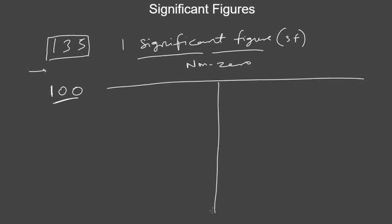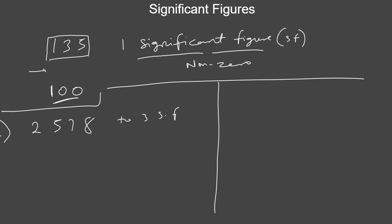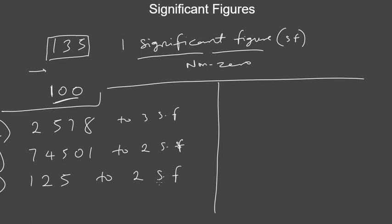I'm going to list out the rules as I go through some examples. Let's deal with numbers without decimal points first, then look at examples with decimal points. If you are asked to convert 2578 to three significant figures, 74501 to two significant figures, and 125 to two significant figures — let's take these three examples.